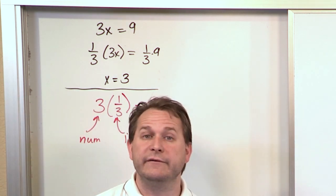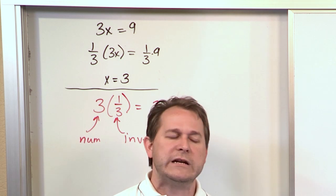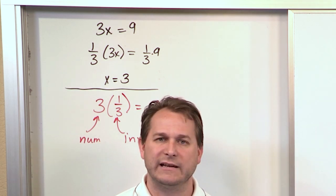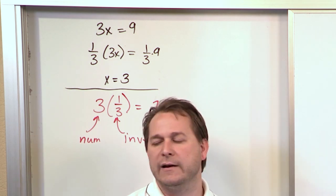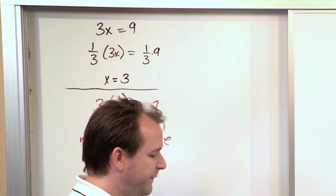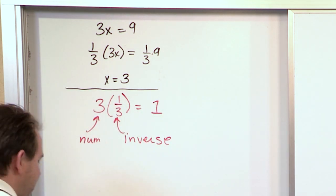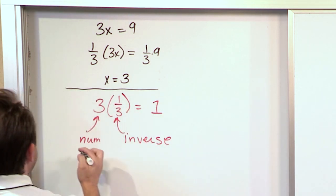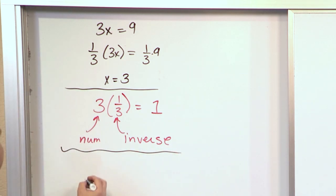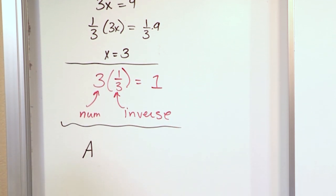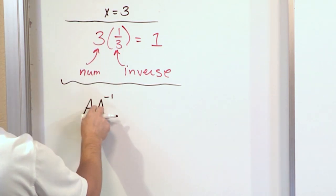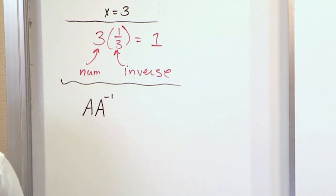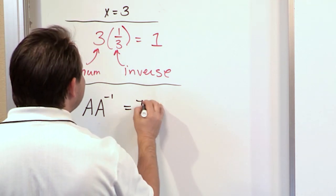That's the concept of an inverse in terms of numbers. Now we want to extend this concept to linear algebra and matrices, because we want to figure out how to calculate the inverse of a matrix. Ultimately, if we're given a matrix A, we want to figure out what matrix we can multiply it by — denoted A to the negative one — to give us not a number one, but an identity matrix.